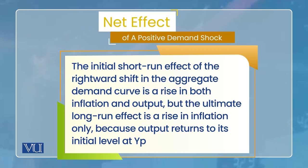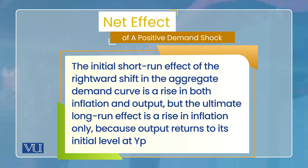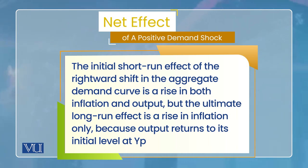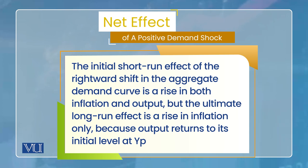Net effect kya hua: short run ke andar output increase ho gayi potential level se, aur inflation rate bhi increase ho gaya. Lekin long run mein output apne potential pe wapas aa gayi, jabke inflation rate further increase ho gaya. Is ka matlab hai jo bhi positive demand shock hota hai, wo economy ki output ko short run mein badha sakta hai, lekin long run mein wo sirf aur sirf inflation rate ko badhaata hai, output ko nahi badha sakta.